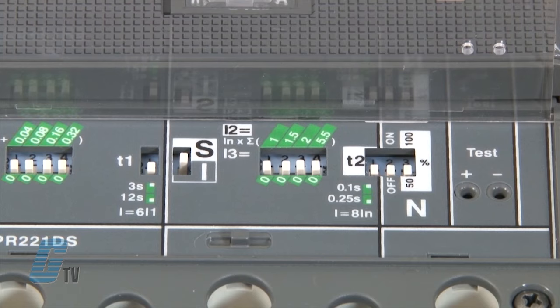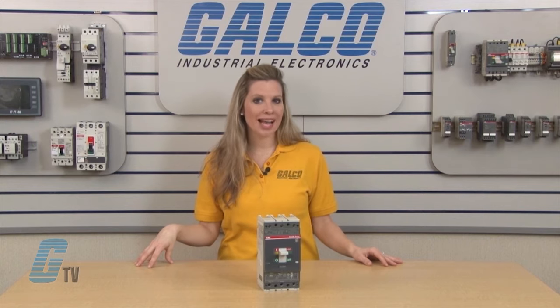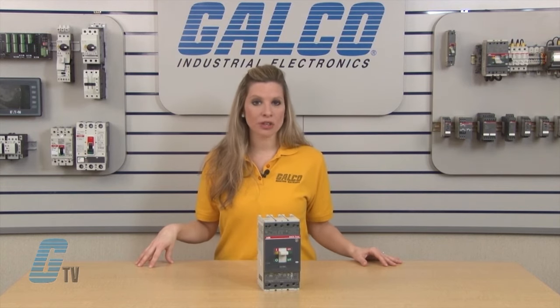The dip switches in the middle will determine the short circuit threshold. This can be from one to ten times the maximum current rating of the circuit breaker.